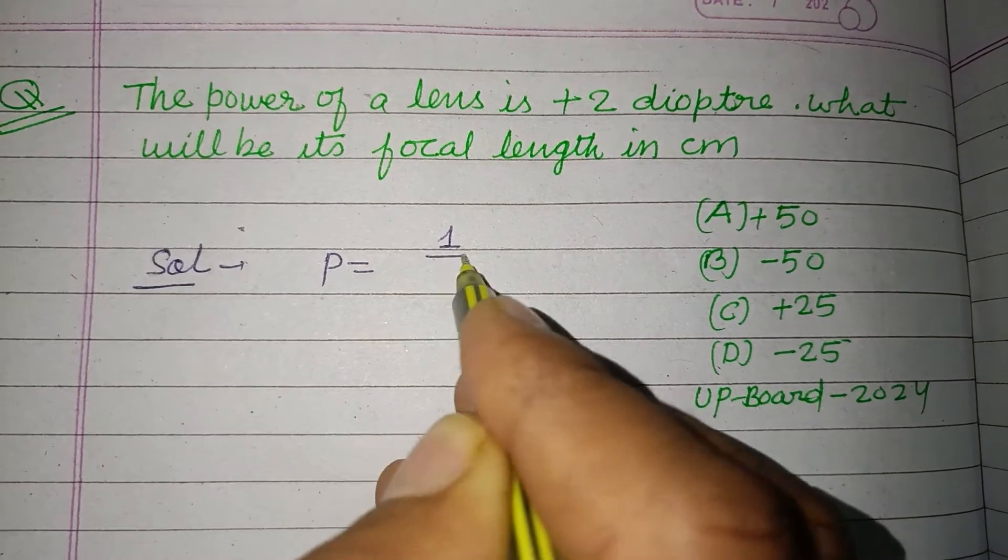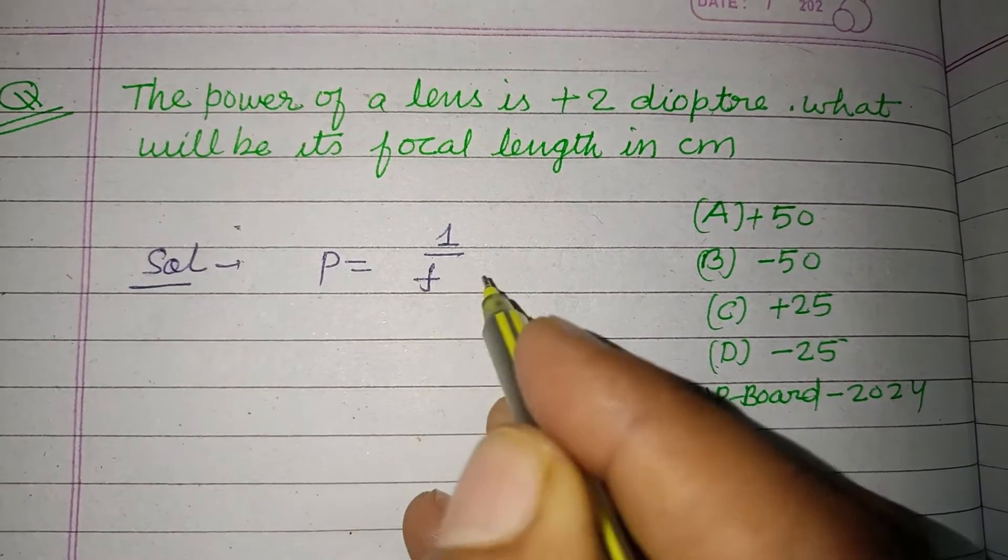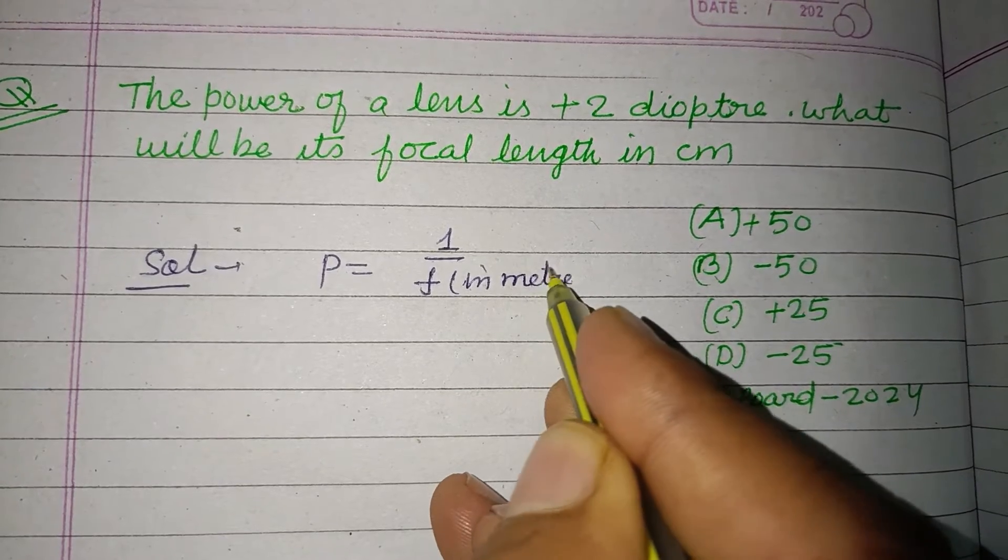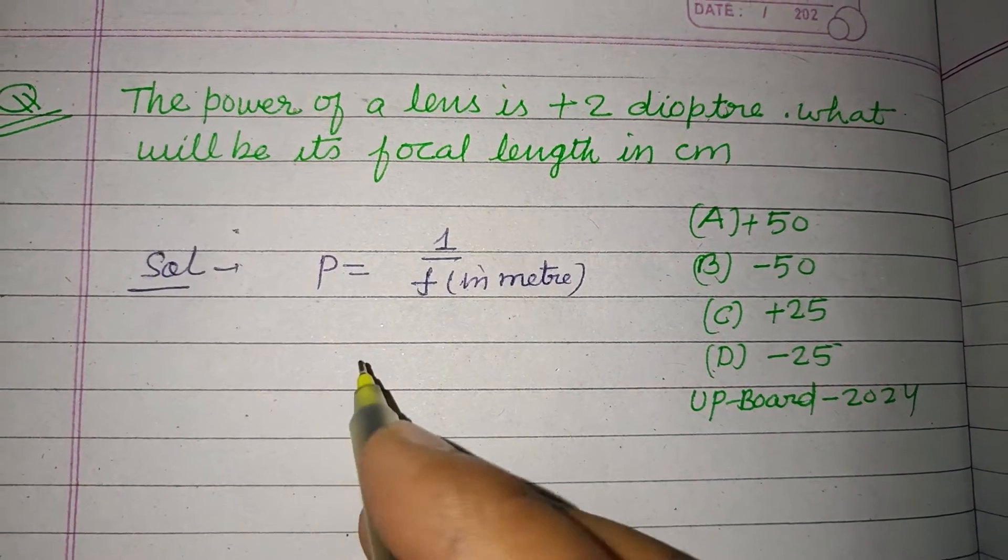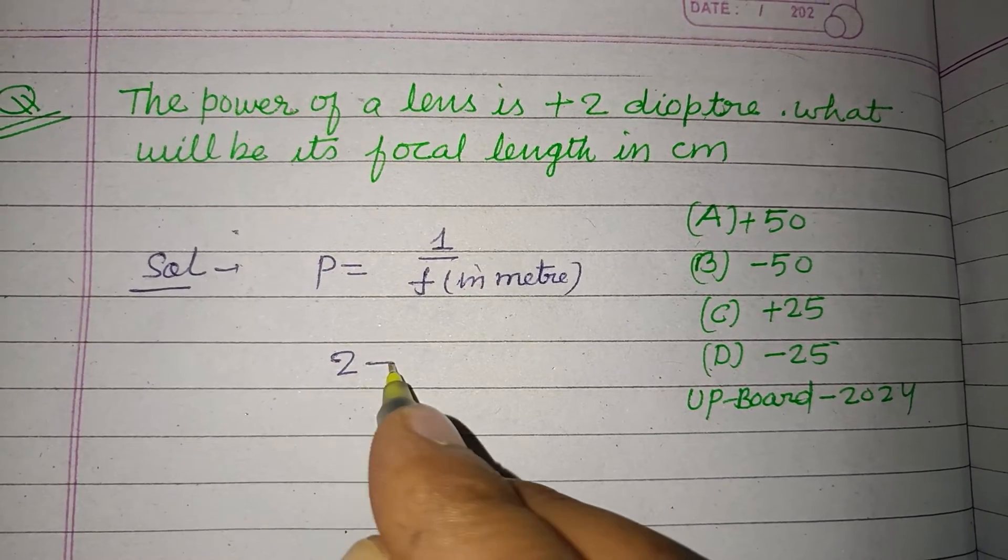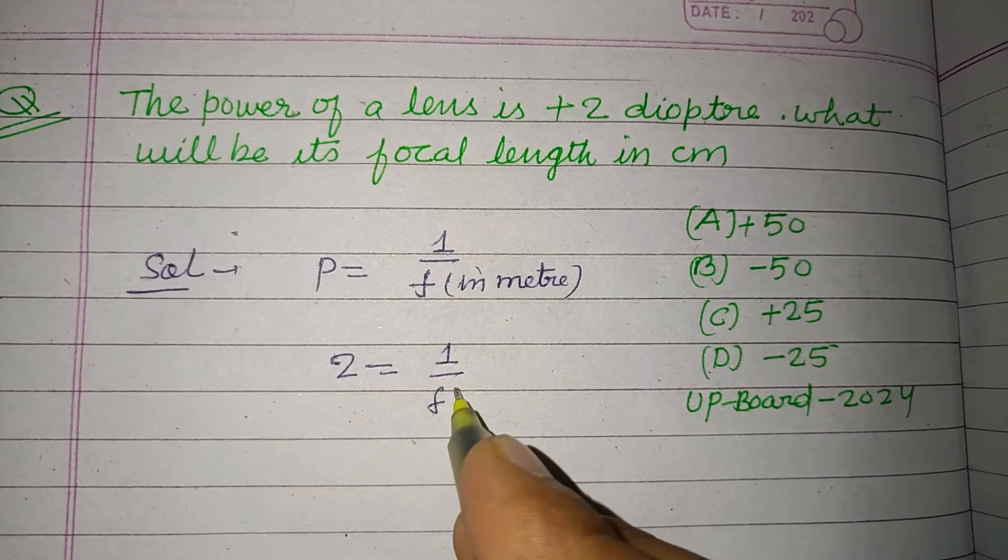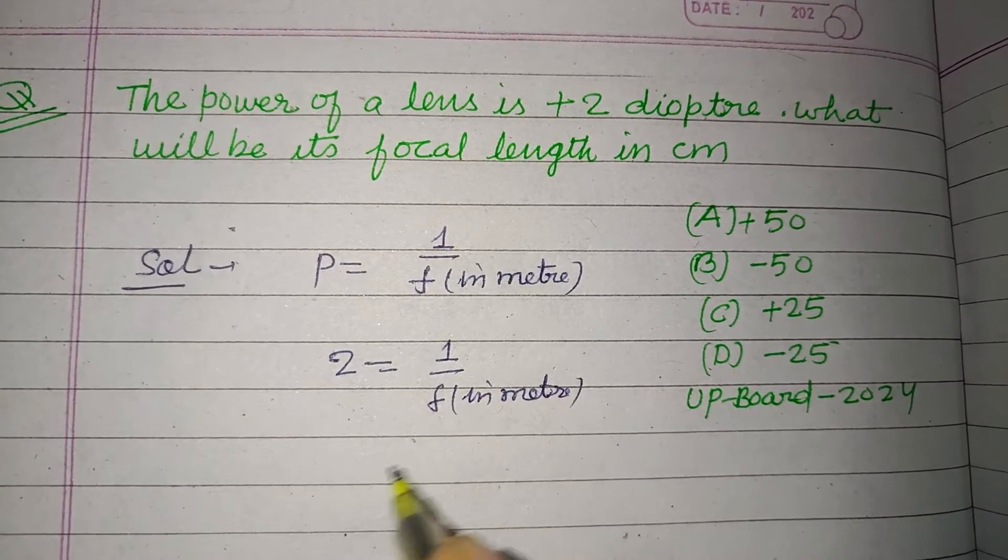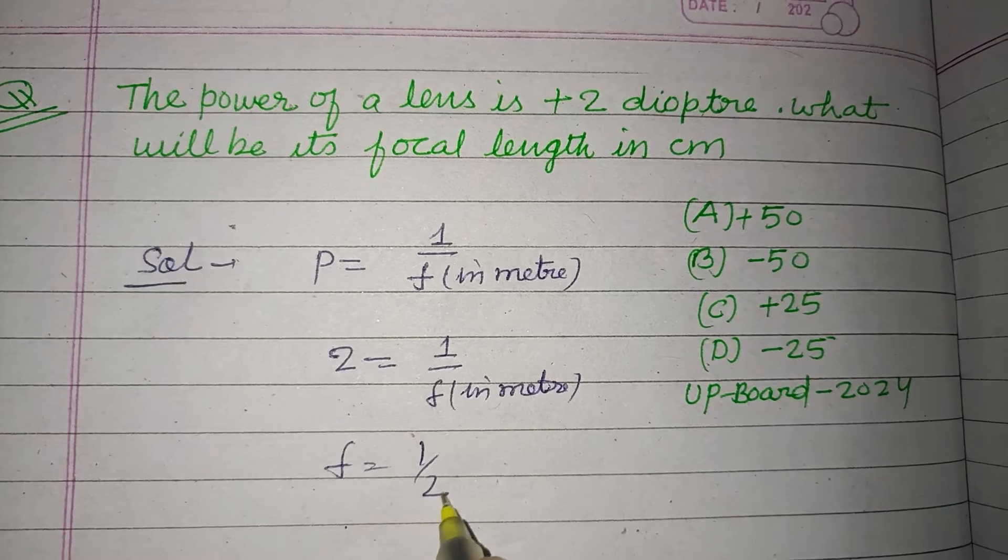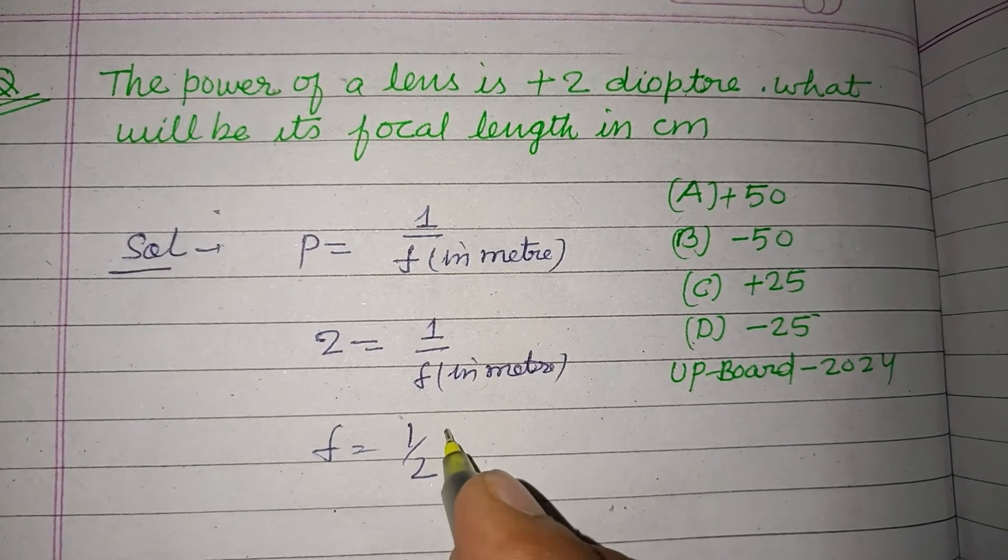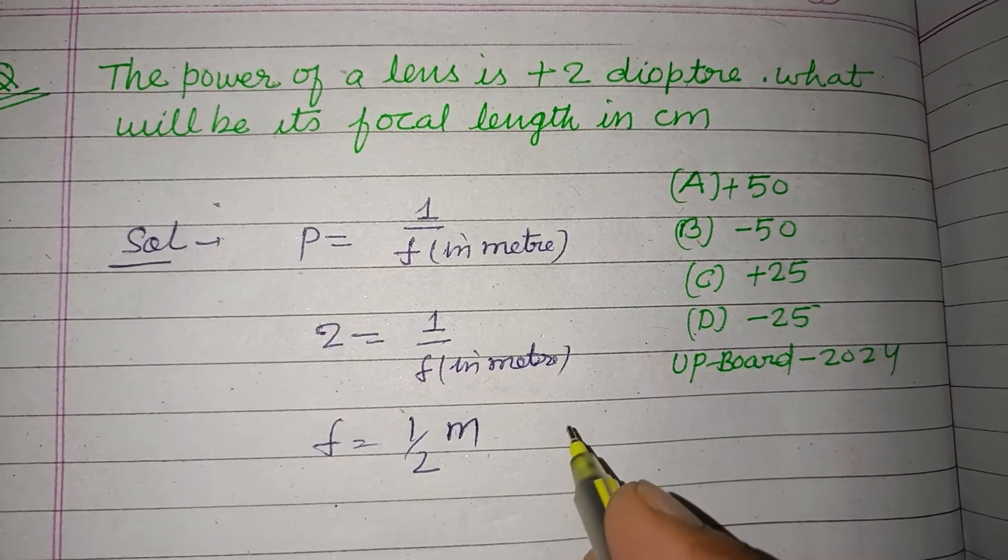a lens equals 1 upon focal length f in meter. So here, power is given to us as +2 = 1 upon f in meter. So f equals 1 by 2 meter. But if you change it